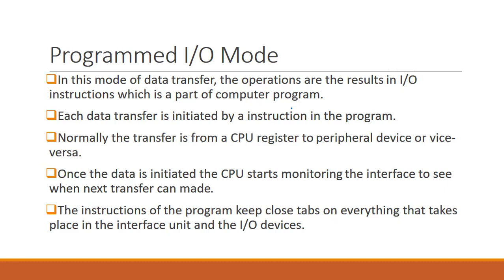As we know, a computer executes instructions one by one. When the CPU fetches an instruction into the instruction register and that instruction is an input-output instruction, there will be a data transfer between the peripheral devices and computer memory. In programmed input-output mode, the instruction in the instruction register is an input-output instruction that is part of a computer program.